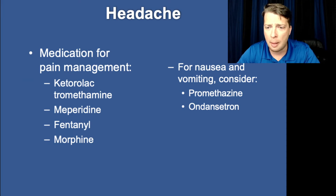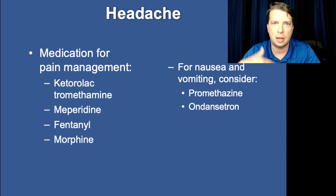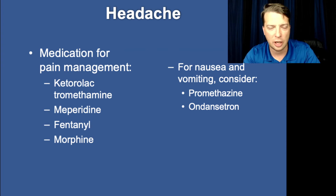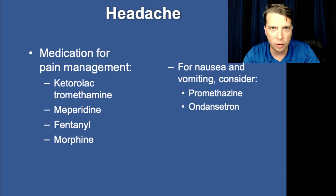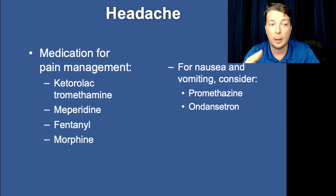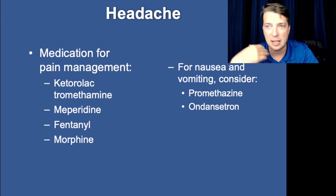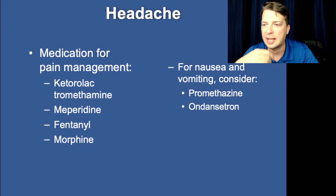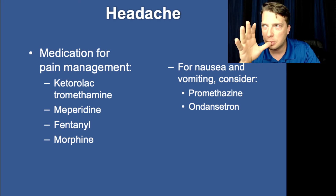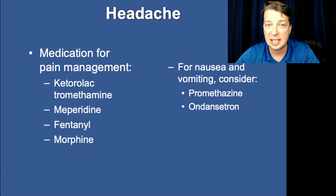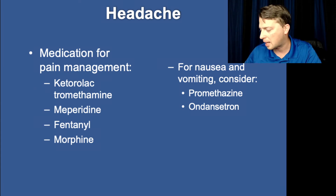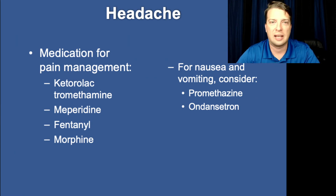Ketorolac and meperidine are NSAIDs — great medications for dealing with headaches in general. I'm not a huge fan of fentanyl and morphine for headache complaints in the pre-hospital environment, and they're not shown to be particularly effective for migraines and cluster headaches. Aspirin, caffeine, and Tylenol tend to be much more effective. Many headaches can be severe enough to cause nausea, so don't hesitate to use anti-emetics if necessary.